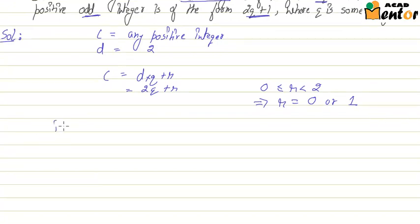So taking the first case, if R is 0 then C becomes 2Q plus R which is 0. So effectively it is only 2Q.